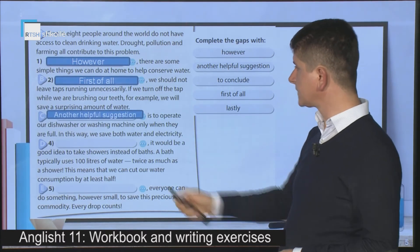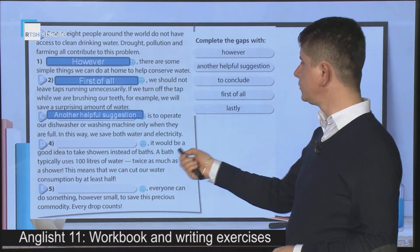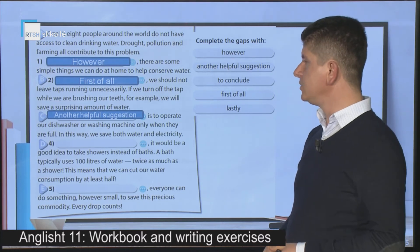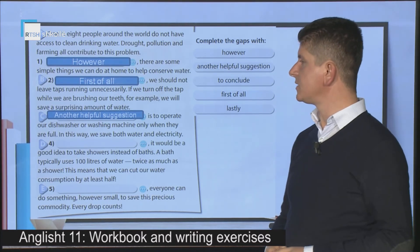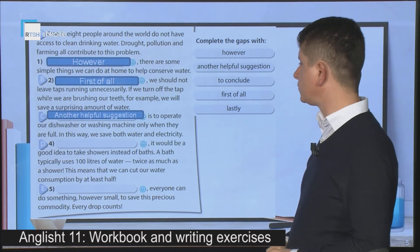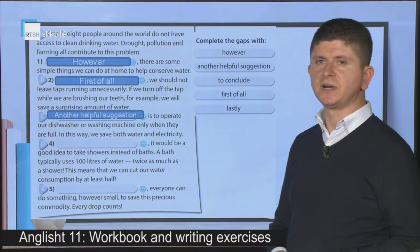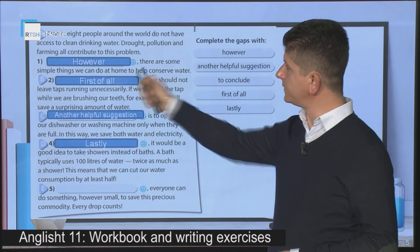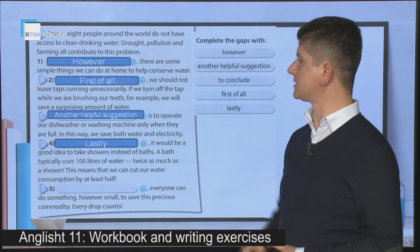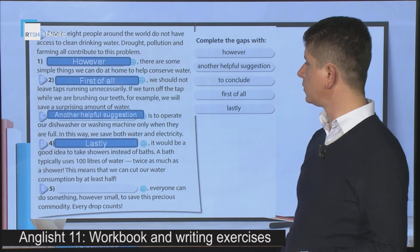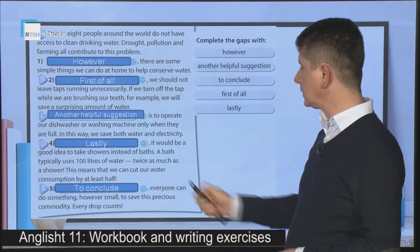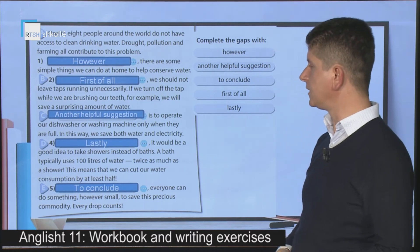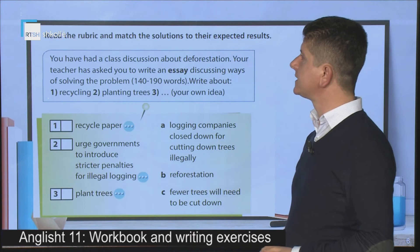Another helpful suggestion — this is the second suggestion. Then we have the third suggestion: 'It would be a good idea to take showers instead of baths. A bath typically uses a hundred liters of water, twice as much as a shower. This means that we can cut our water consumption by at least half.' So: first suggestion, second suggestion, and lastly the last suggestion. Then we have the conclusion, which uses 'to conclude': 'To conclude, everyone can do something, however small, to save this precious commodity. Every drop counts.'